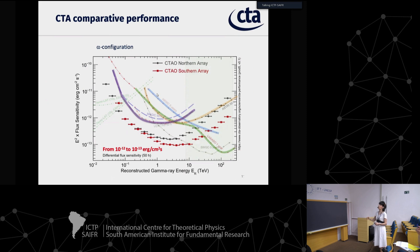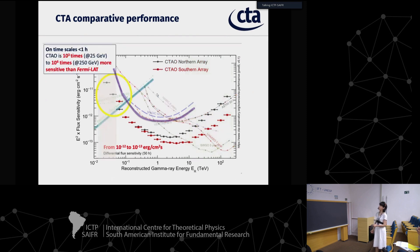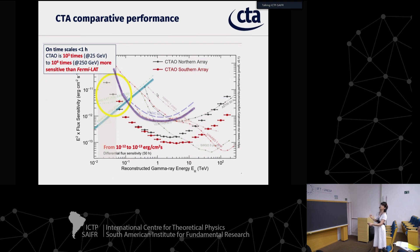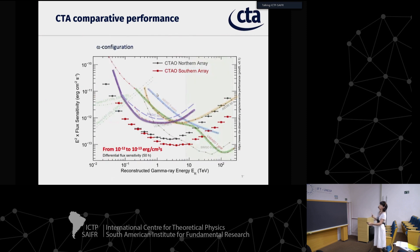This is the comparative performance - the sensitivity of CTA compared with other current facilities. The lower the curve, the better the sensitivity. In the Fermi-LAT region, the sensitivity of Fermi is better at low energies; nevertheless, that sensitivity is for 10 years of Fermi-LAT satellite exposure, while for CTA these curves are for 50 hours of exposure. So on timescales of hours, CTA will have 1,000 to 1,000,000 times better sensitivity than Fermi at these small energies. And at the large energy tail, LASSO after one year exposure has better sensitivity than CTA's 50 hours, but these experiments are complementary.